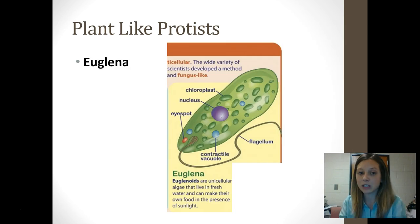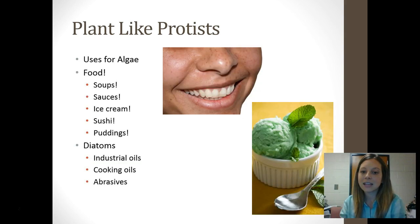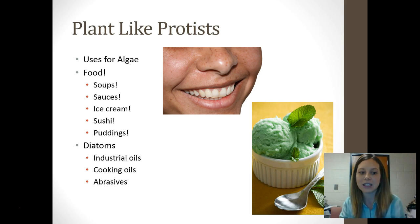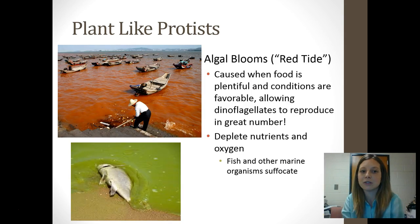The plant-like protist you are going to be responsible for is the euglena — take a minute to pause on that picture and get the major structures labeled. There are also lots of different uses for algae. They're used in all sorts of food. For example, your ice cream has a thickener called carrageenan made using algae. Algae is also used in sushi — that's the stuff wrapped around the outside. Diatoms are used as abrasives, which is actually the abrasive material in your toothpaste.